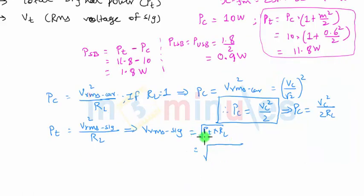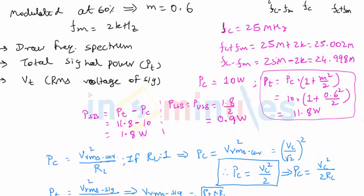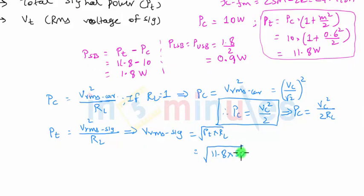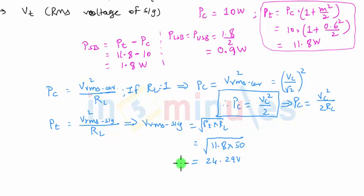We consider total power because we have to find RMS value of the signal, and not of the carrier signal or upper or lower sideband signal. So total power we have got as 11.8 and RL value was given in the question as 50 ohms. So 11.8 into 50, and if I take the square root, I will get RMS voltage of 24.29 volts. So that's the RMS voltage of the signal.